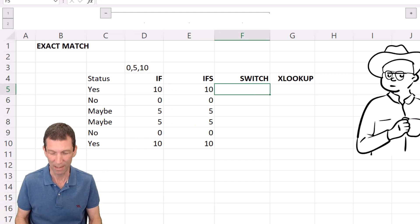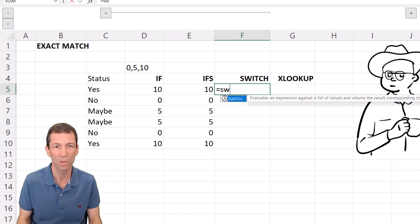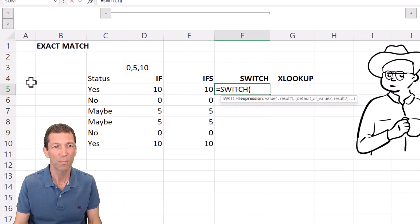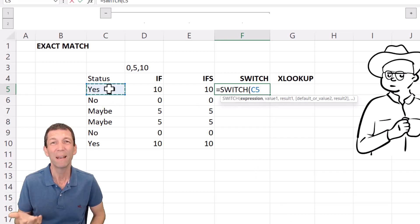Okay so where does switch come in? Equals switch, what's the expression? Well grab the value from c5 but rather than grabbing it multiple times you just grab it once and then you evaluate it.